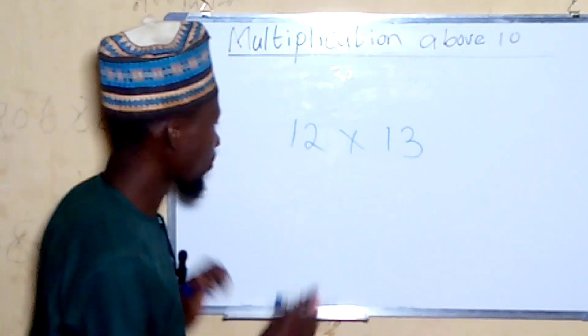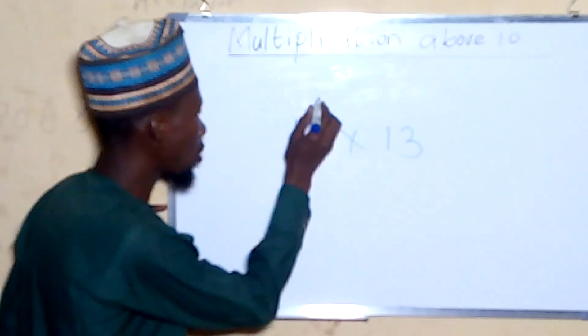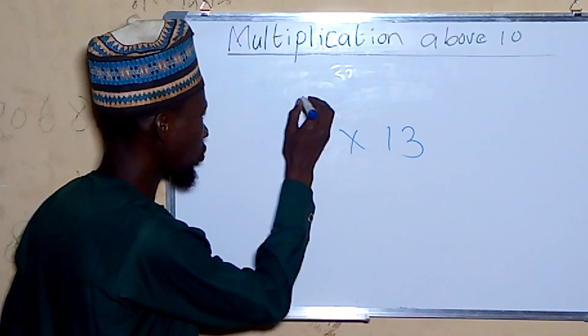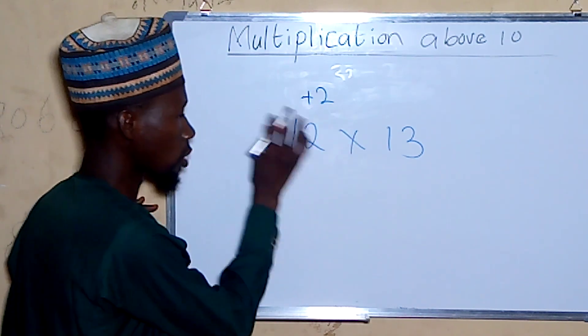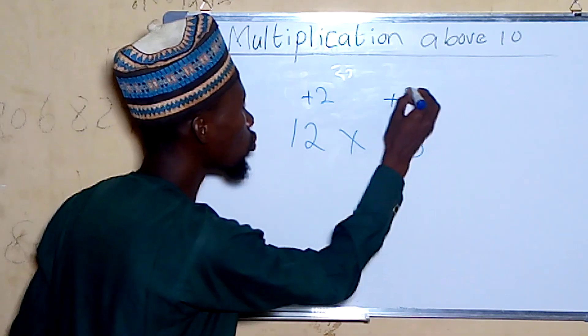In this example with 12 times 13, we identify the numbers above 10.